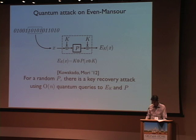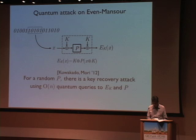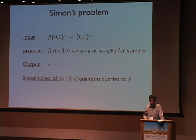On the other hand, it's known that there is a quantum attack against the system. For a random permutation P, it has been proven that you can recover the key completely with only a linear number of queries to both the encryption EK and P. It's quite simple, and it uses something we've all learned in quantum computing 101, which is Simon's problem.